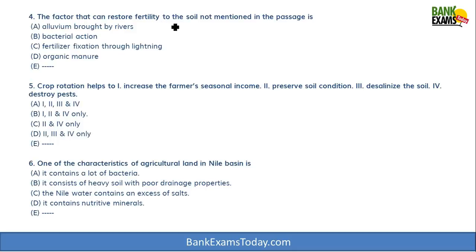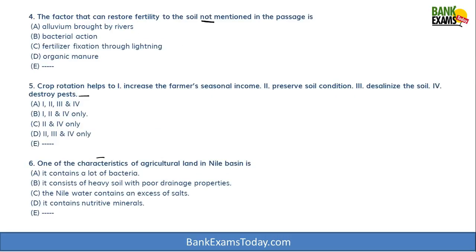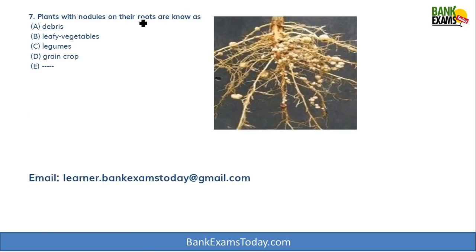Question four: the factor that can restore fertility to the soil NOT mentioned in the passage. We need to find which factor is not mentioned. Question five covers how crop rotation helps — options include increasing farmers' seasonal income, preserving soil condition, desalinizing the soil, and destroying pests. Question six asks about a characteristic of agriculture land in the Nile basin.